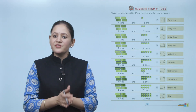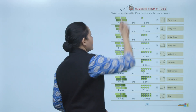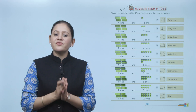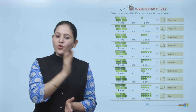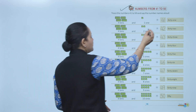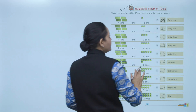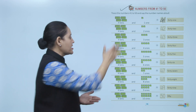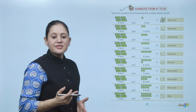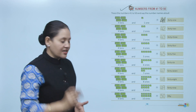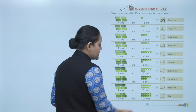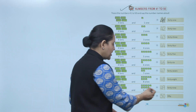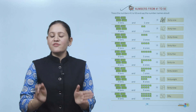Next, numbers from 41 to 50. Trace the number 41 to 50 and say the number name aloud. 41 means 40 plus 1, meaning 4 tens and 1 one — that makes number 41. F-O-R-T-Y-O-N-E. Like this you can make number names up to 49. Then comes 50: 5-0. That means 4 tens and 10 ones — 40 plus 10 equals 50. F-I-F-T-Y.